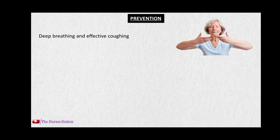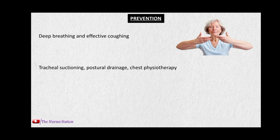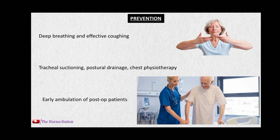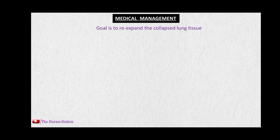Atelectasis is a preventable condition. It can be prevented by deep breathing and effective coughing, because this dislodges secretions and other fluids present inside the airways so they can be easily removed. Tracheal suctioning, postural drainage, and chest physiotherapy also help to dislodge and remove secretions from the patient's airways. It can also be prevented by early ambulation of post-operative patients.